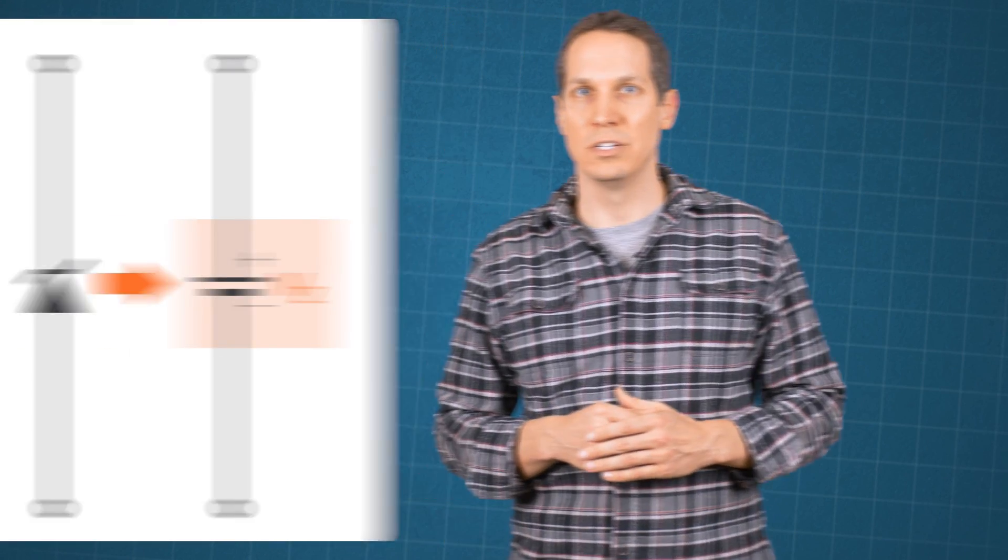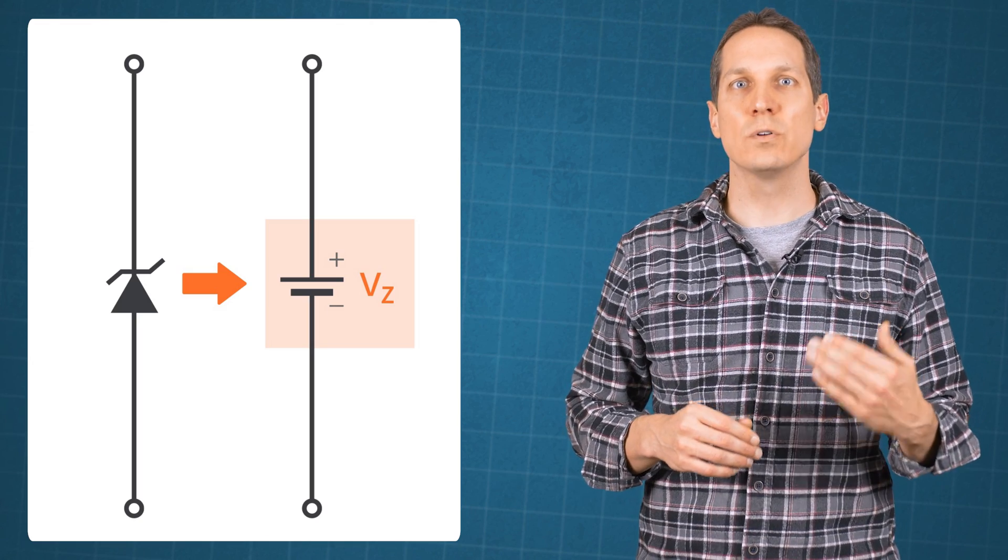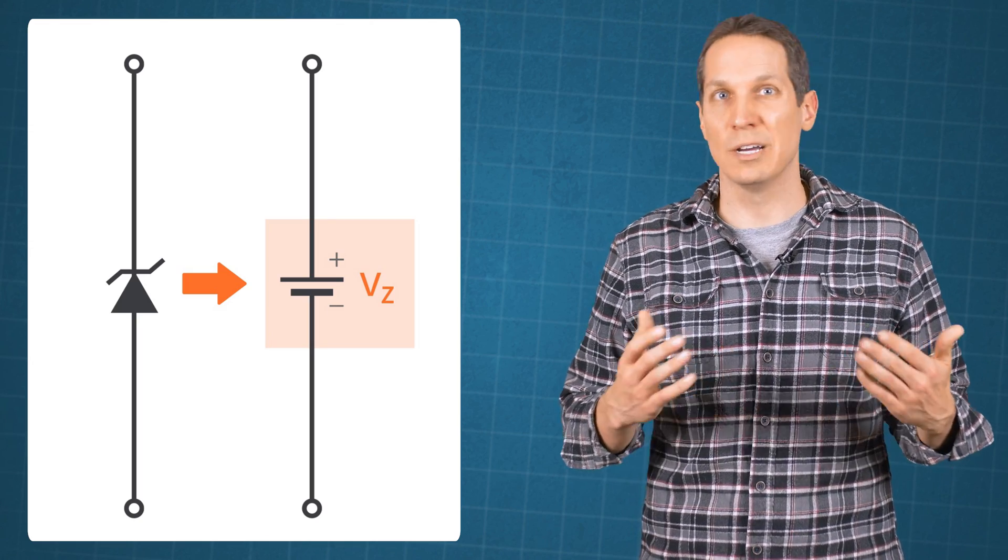When a Zener diode is used as a voltage regulator, ideally it has a constant voltage drop equal to its nominal Zener voltage. This constant voltage drop across the Zener diode produced by a reverse breakdown is represented by a DC voltage symbol even though the Zener diode does not produce a voltage.